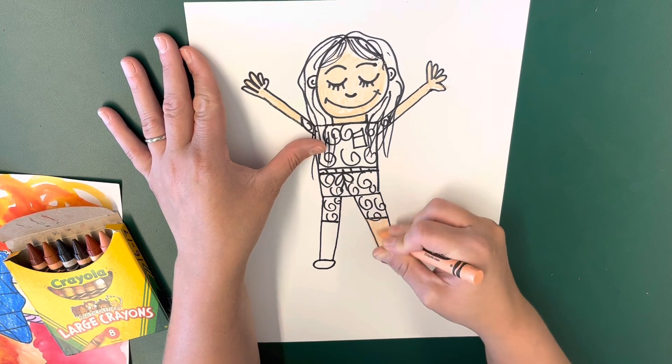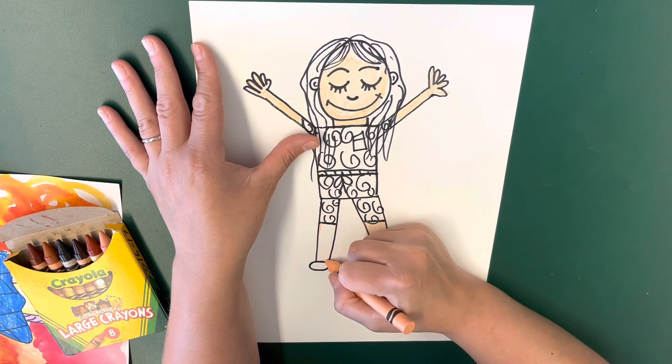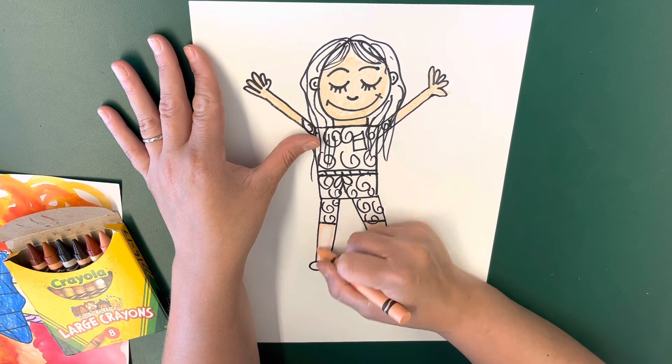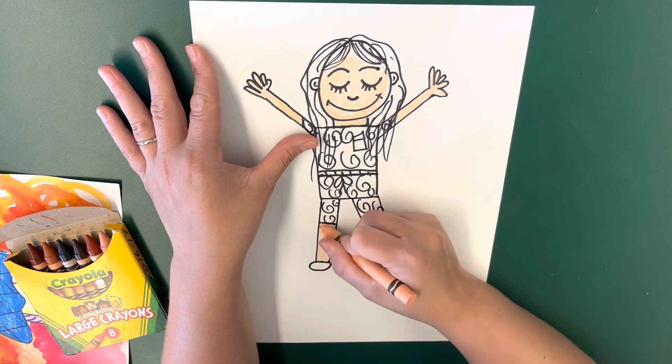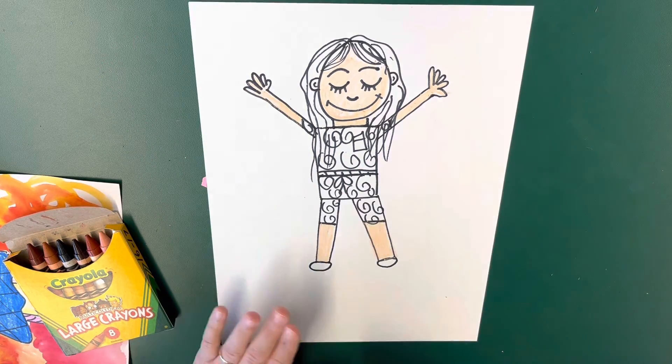So I do up and down coloring for flat shapes and circles for rounded shapes, and I'm going to push hard on that crayon.